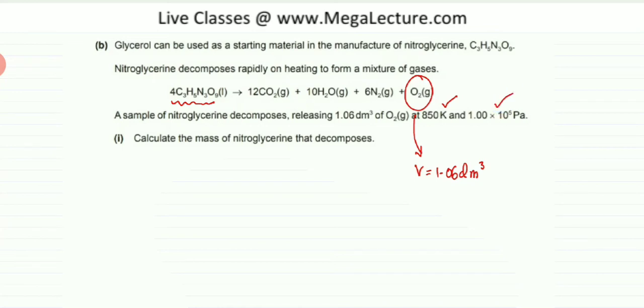So what I am going to do is the first thing I am going to do is try and find the moles of oxygen that we have. To do that we would use the equation PV equals nRT.